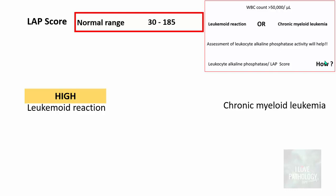So in leukemoid reaction, the LAP score will be high. In chronic myeloid leukemia, we are dealing with increased leukocyte counts which are abnormal and immature leukocytes, so the alkaline phosphatase activity in these cells is extremely low. Therefore, the score per 100 cells will also be low. In CML, the LAP score will be extremely low compared to leukemoid reaction.